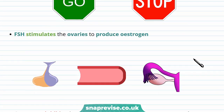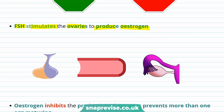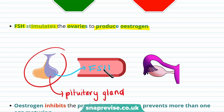FSH, or follicle-stimulating hormone, stimulates the ovaries to produce estrogen. FSH is produced by the pituitary gland, and once released it travels in the blood to the ovaries, where it stimulates them to produce estrogen.